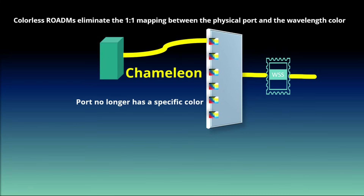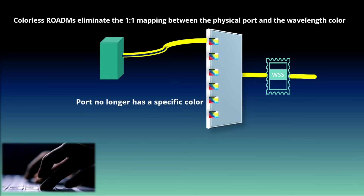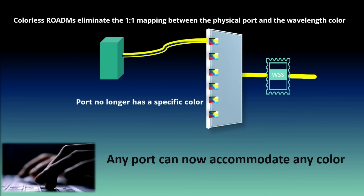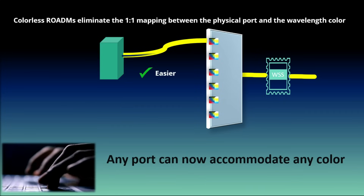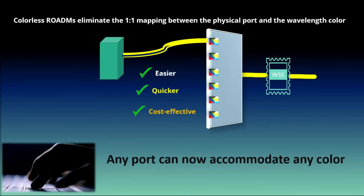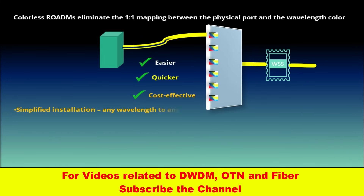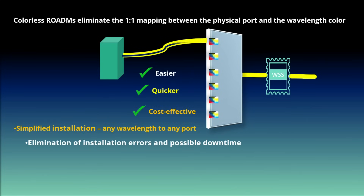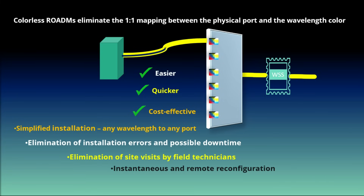With this colorless functionality, any transponder wavelength can be connected to any ROADM port, and the wavelength can be recolored anytime. This is now a much easier, quicker, and more cost-effective operation, resulting in significant improvements: simplified installation with any wavelength to any port, elimination of installation errors and possible downtime, elimination of site visits by field technicians, and instantaneous remote reconfiguration that enables network automation.